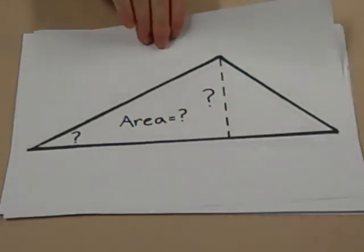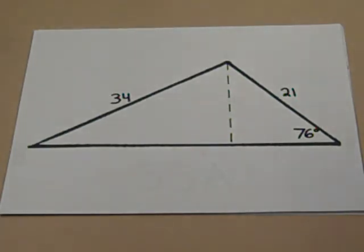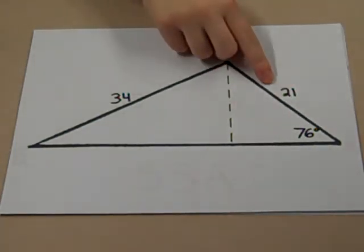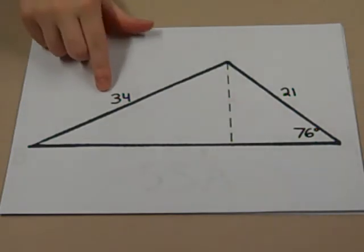And how do I do that? Well, let's see what we already know. We know that one of the angles is 76 degrees, one of the sides is 21 feet, and the actual ramp is 34 feet.